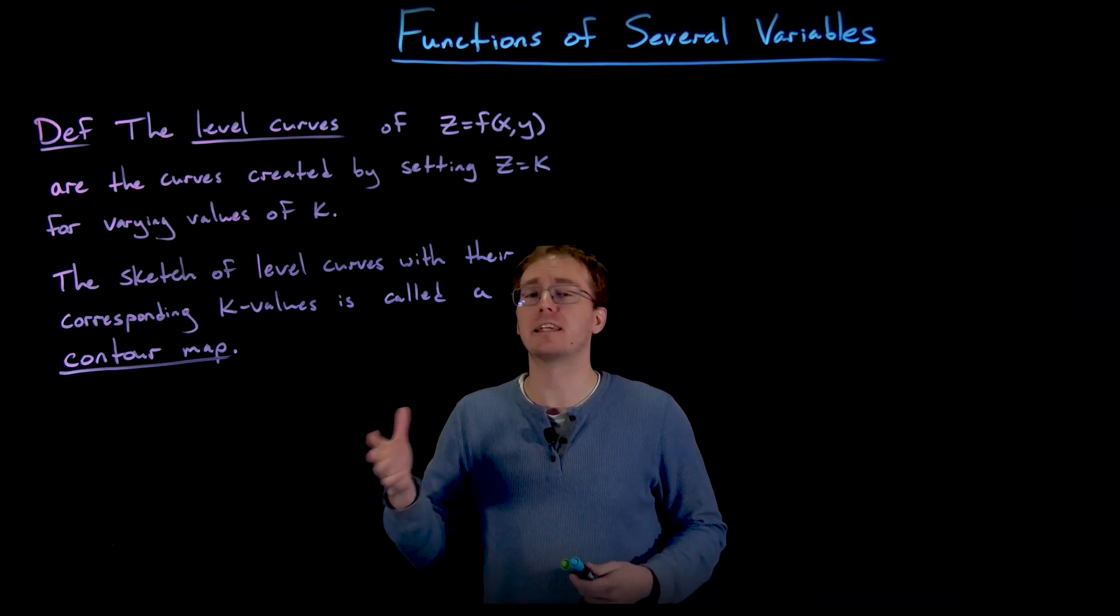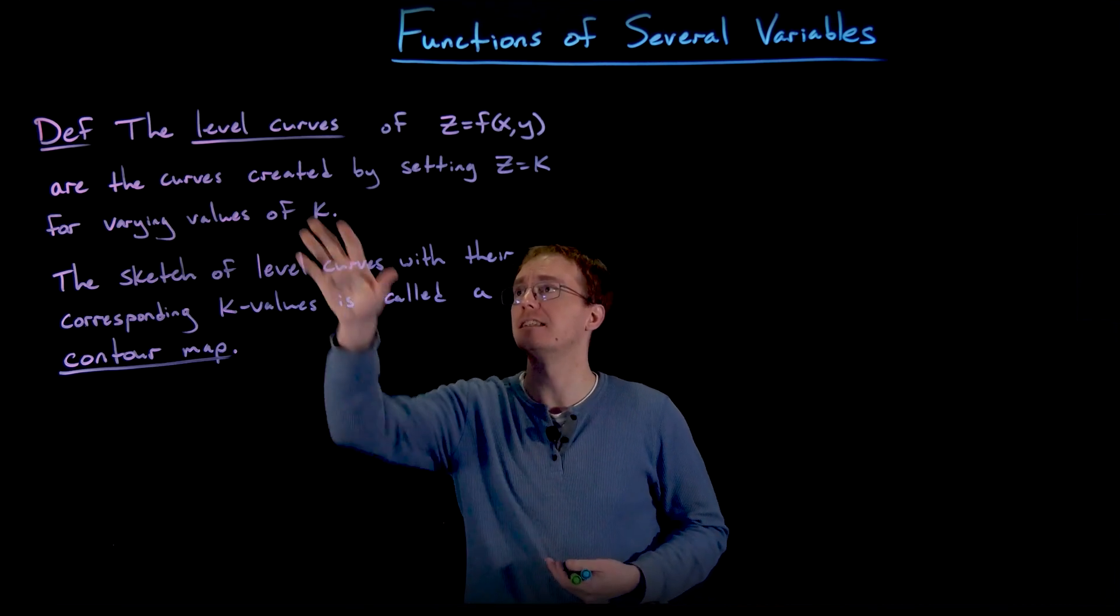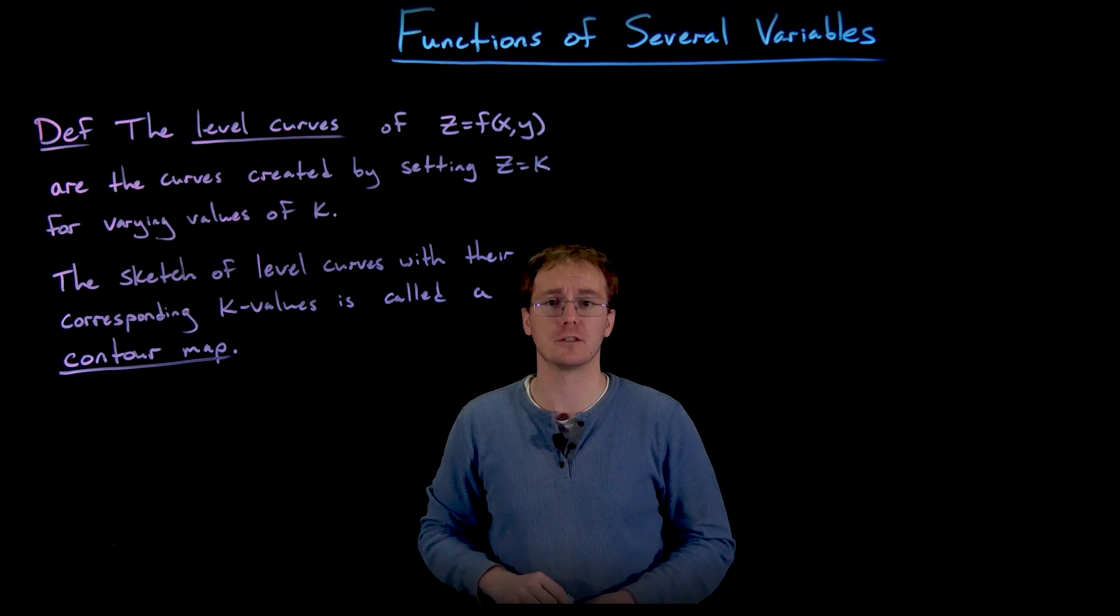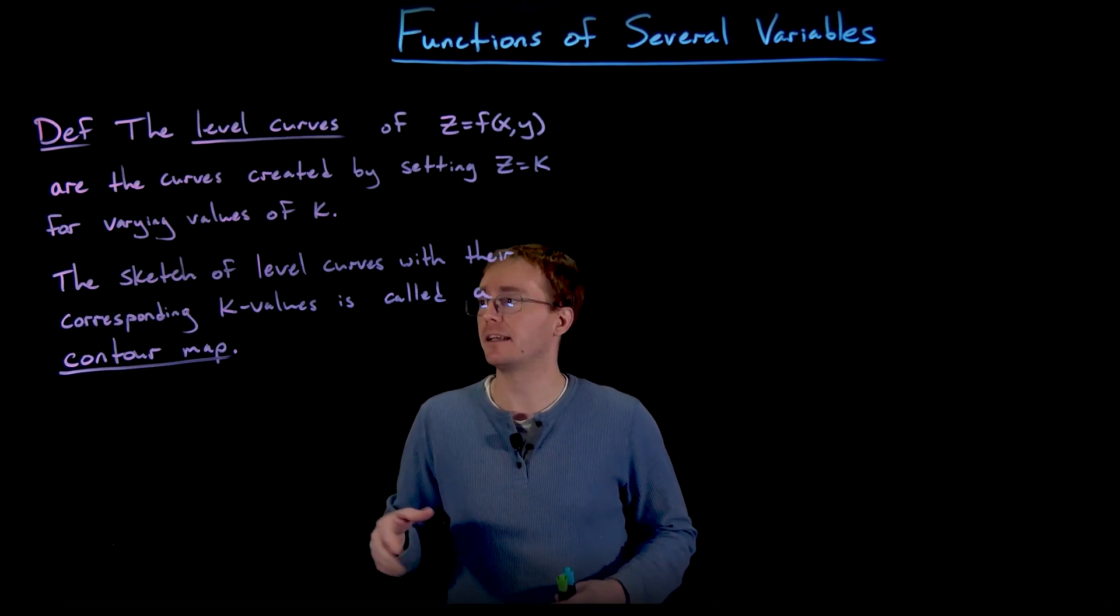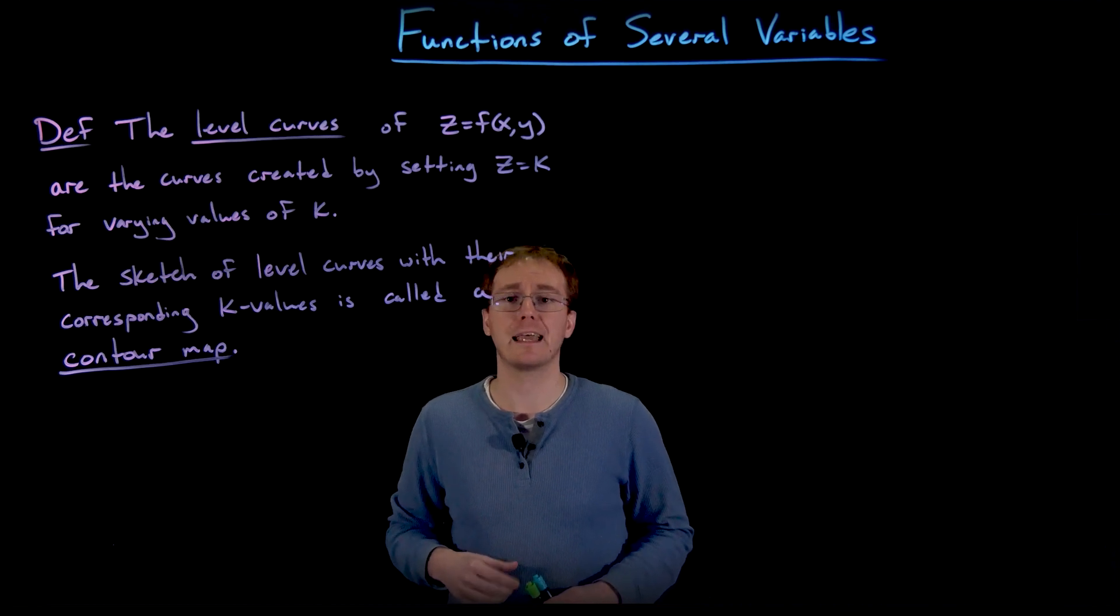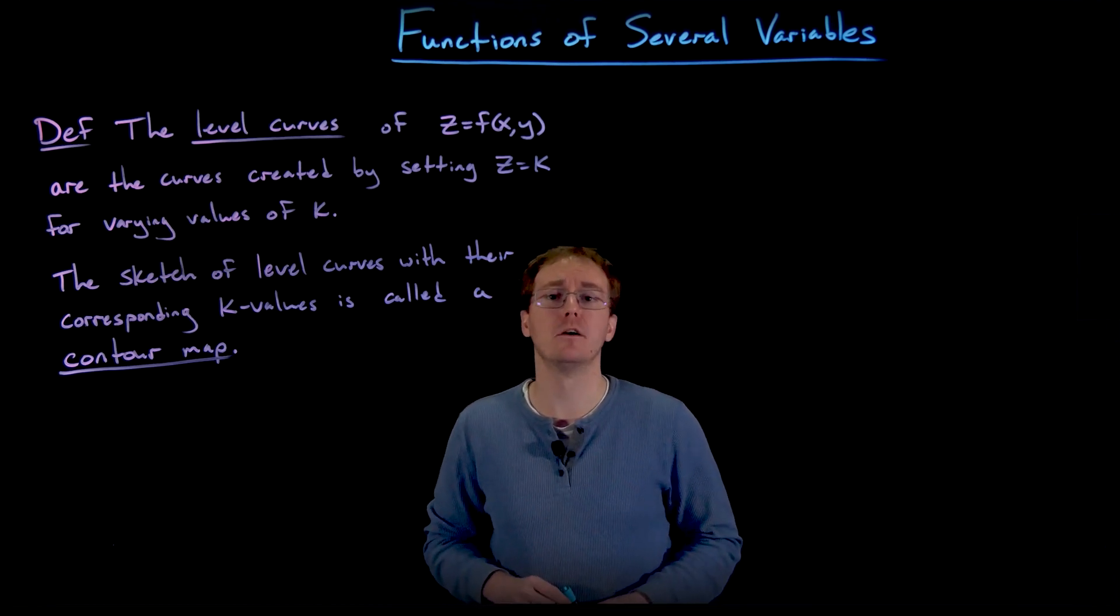So we do this for varying values of k to set z equal to these different constant values to create these different level curves of our function. And so then if we look at the sketch of these level curves in the xy plane labeled with their corresponding k or constant values, that creates what we call a contour map for our function.